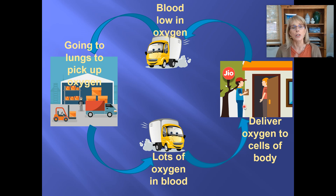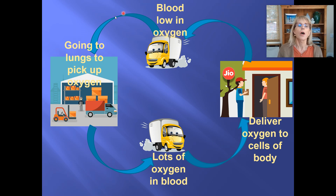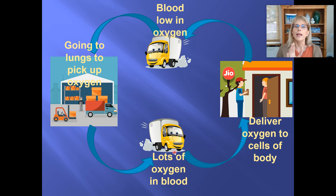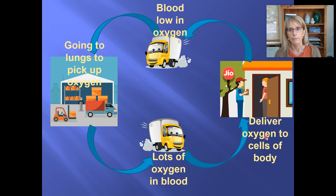As the blood drops off the oxygen, it changes to a darker color, looks blue. At the same time, it picks up trash — in this analogy, the trash is carbon dioxide, CO2. So the blood coming back towards your heart is low in oxygen and high in CO2. It goes into the right side of the heart, which pushes it to the lungs, where it picks up oxygen and drops off the CO2, then comes back to the heart red. Blood is simply picking up oxygen, dropping off CO2, going to the heart for a push, dropping off oxygen, picking up CO2, going back to the heart, getting a push, going to the lungs — over and over again.